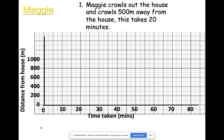Let's go through the answers. Part one: Maggie crawls out of the house and crawls 500 meters away from the house, taking 20 minutes. I hope you were able to represent that on your distance-time graph. Let's check — 20 minutes taken and 500 meters away from the house. There we go.